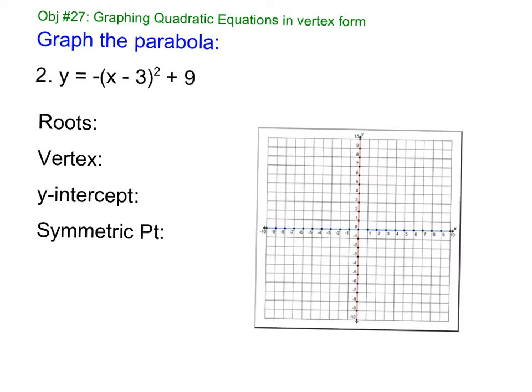Alright, pause and do this one on your own. Alright, so my vertex changed the sign of the inside. Outside stays the same. That negative in front does not affect the vertex. But what does it do? That changes our up to down. So instead of going over and up, 1, 1, 2, 4, 3, 9. I can, I'm going to do 4, 16 for this one. We change it to down.